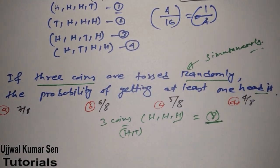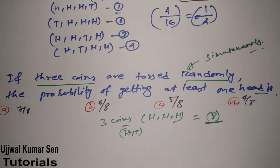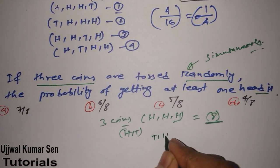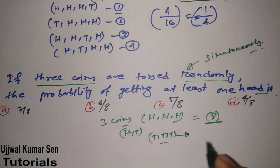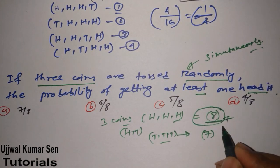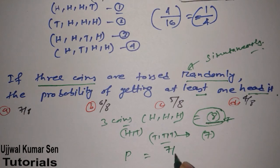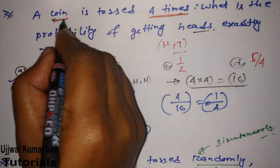If you try to list all outcomes with at least one head, you might choose the wrong answer. Instead, use the shortcut: think of the opposite — what is the probability of getting no heads at all? That is only one outcome: Tail-Tail-Tail. So the favorable outcomes for at least one head = 8 − 1 = 7, and the probability is 7/8. Option A is the right answer.